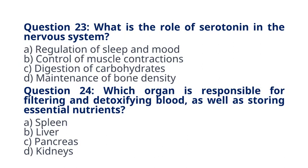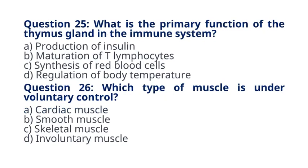Question 24. Which organ is responsible for filtering and detoxifying blood, as well as storing essential nutrients? Question 25. What is the primary function of the thymus gland in the immune system? A. Production of insulin. B. Maturation of T lymphocytes. C. Synthesis of red blood cells. D. Regulation of body temperature. The correct answer to question 25 is option B. Maturation of T lymphocytes. Explanation: The thymus gland plays a crucial role in the maturation of T lymphocytes, T cells, which are important components of the immune system.